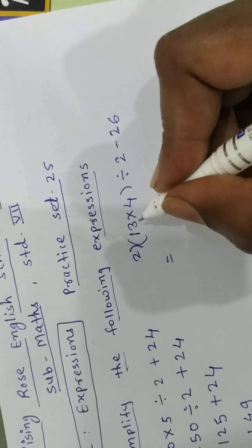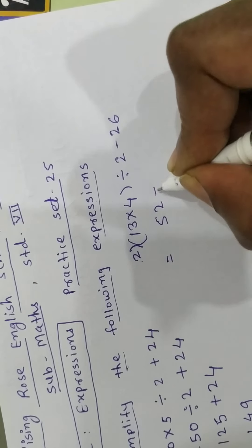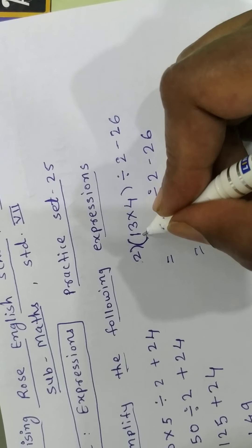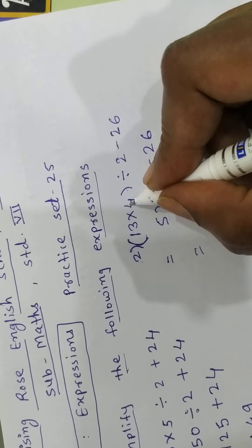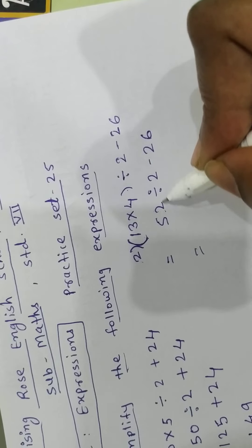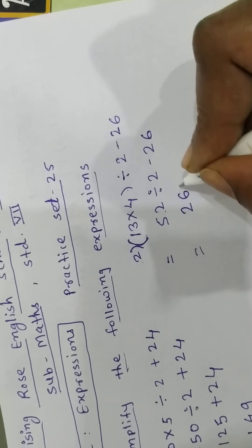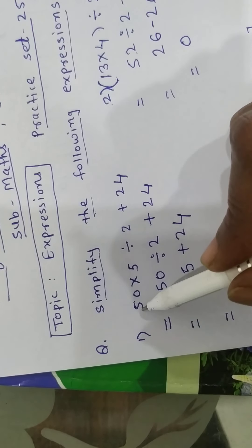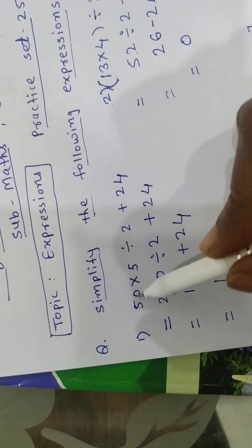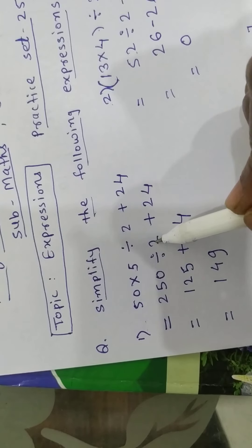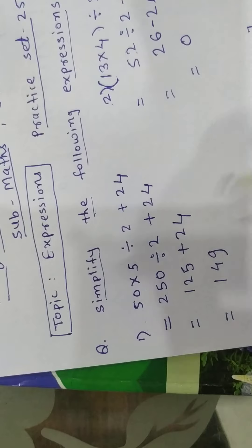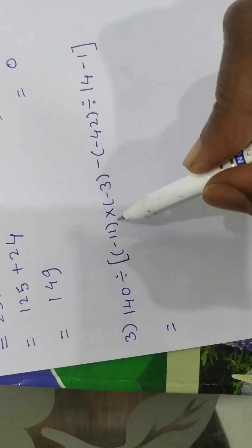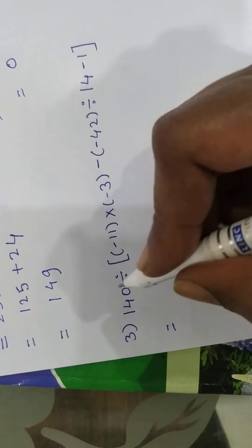Second example: 30 into 4. 13 fours are 52, divided by 2 minus 26. You have done the operations in the bracket first. Then there is division — you have to do division first. Look at here: here is a bracket with some operations inside — multiplication, subtraction, division. Then you have to solve the bracket first.